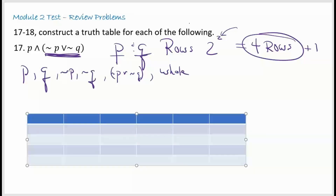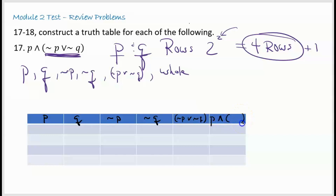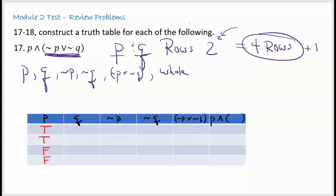Let's fill in everything we need. I need a column for P, Q, not P, not Q, then not P or not Q, and the whole statement P and (not P or not Q). For P, take four rows, split in half — two trues and two falses. Then split two in half — alternate true-false for Q. So: true-true, true-false, false-true, false-false. That covers every possibility for two component statements.